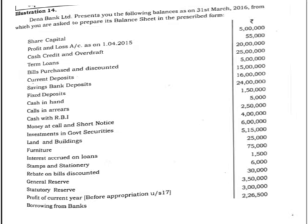Share capital of 5 lakh should be shown in note number 1 under capital and liabilities. Profit and loss account as on 1st April 2015 is last year's profit brought forward at the beginning of the current year amounting to 55,000 — shown in note number 2. For note number 2, we add the previous year's profit brought forward, then deduct any appropriations. Cash credit and overdraft means the bank has given these facilities to customers, so it comes under advances in note number 9.